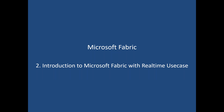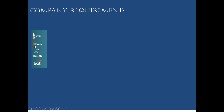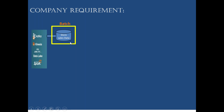Let's consider there is an organization — it can be financial, healthcare, travel, or retail. They have different source systems: CSV files, JSON, text data, databases, and Kafka for real-time. They want to move this data into the cloud as a batch. Batch means you collect data for 30 minutes, one hour, one day, or one month, and then process it — instead of processing as soon as data is generated.